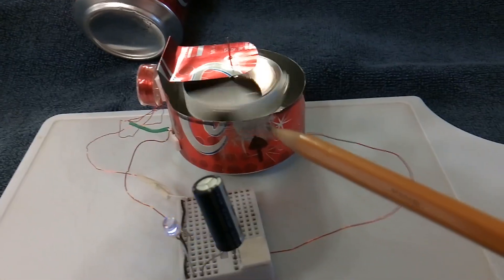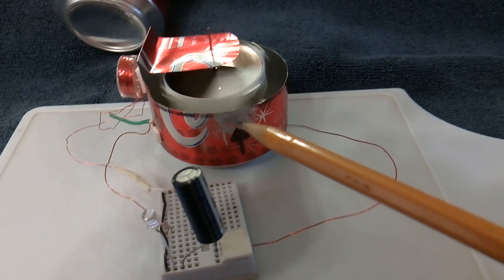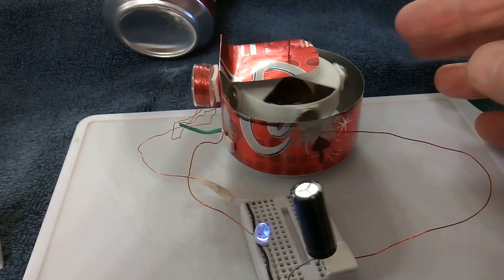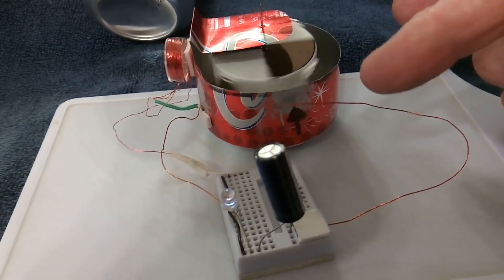And then the steel wire taps the can as the magnet goes by. Let me stop this and show you what it looks like. There's the rotor with the magnets, and as the rotor goes around it pulls on that wire, wire taps the can, completes the circuit, and around and around you go.